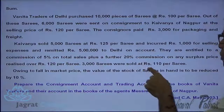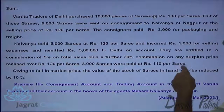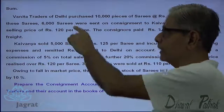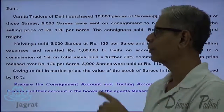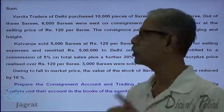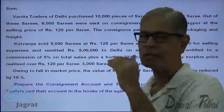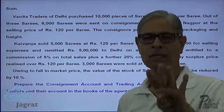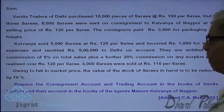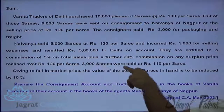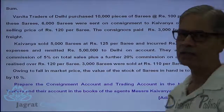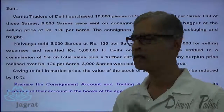3,000 sarees were sold at ₹110 per saree. Now, 10,000 pieces were purchased; 6,000 sent to the consignee; consignee has sold 5,000 units; 1,000 is the consignment stock. Out of 10,000, 6,000 were sent to the consignee, so 4,000 is held by the consignor. Out of this 4,000, 3,000 sarees were sold at ₹110, so 4,000 minus 3,000 is the stock held by the consignor.